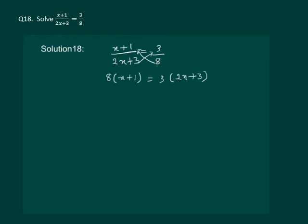Now open the bracket. We get 8 into x is 8x plus 8 into 1 is 8, equal to 3 into 2x is 6x plus 3 times 3 is 9.